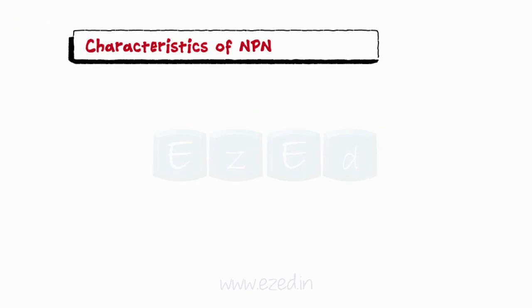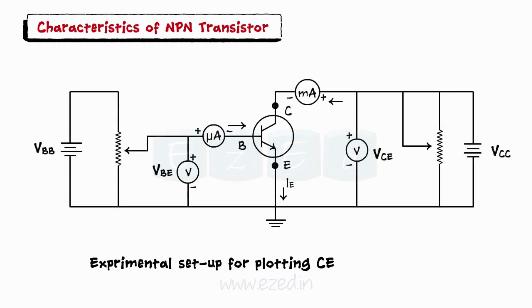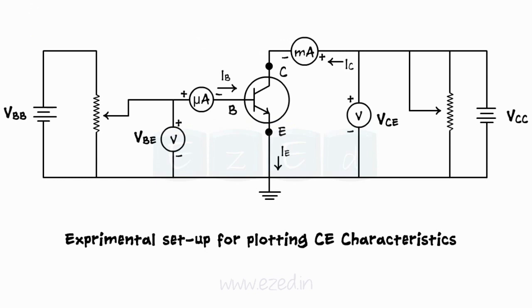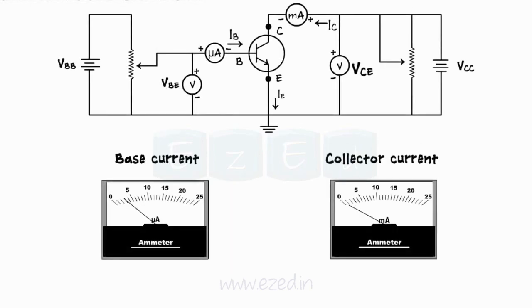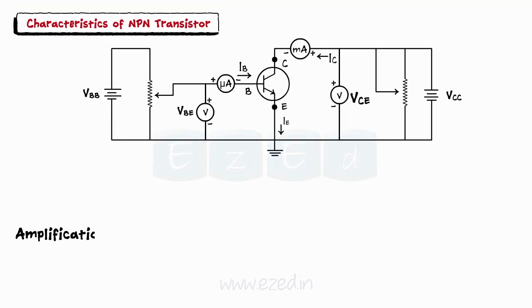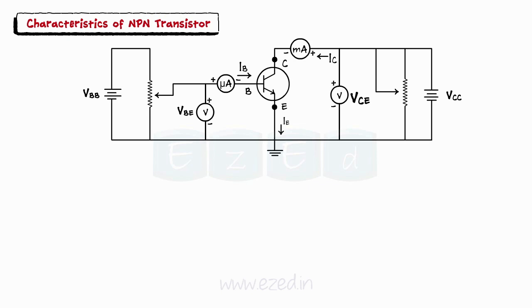Let's study the characteristics of the NPN transistor in common emitter configuration. The experimental setup is as shown. We measure voltages VBE and VCE using voltmeters, and currents IB and IC using an ammeter. In BJT, a small change in the base current causes a very large change in the collector current. This defines the amplification factor beta, given by the ratio of change in collector current to change in base current. Thus BJT is called a current-controlled current source.